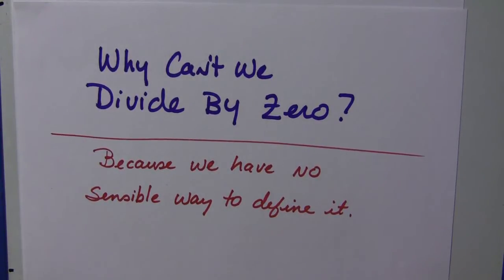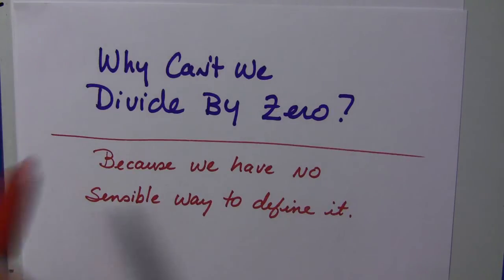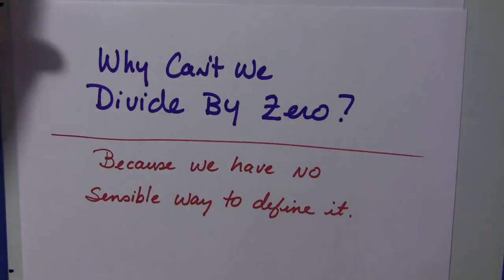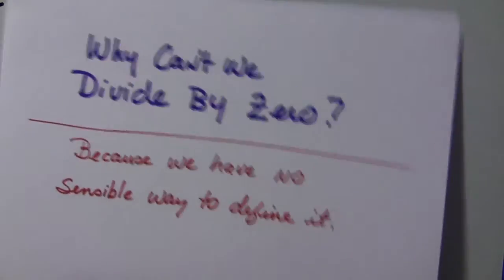In this video, we're going to go over why we can't divide by zero. This is a question that comes up for high school students as well as for calculus students. Why can't we divide by zero? Very basically, because we have no sensible way to define it. So let's look at some problems here regarding dividing by zero.